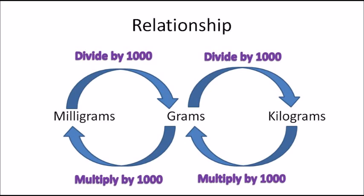Let's talk about the relationship between milligrams, grams, and kilograms. Milligrams is the smallest unit of measure of the three, and kilograms is the largest. The relationship is that 1000 milligrams make one gram, and 1000 grams make one kilogram.